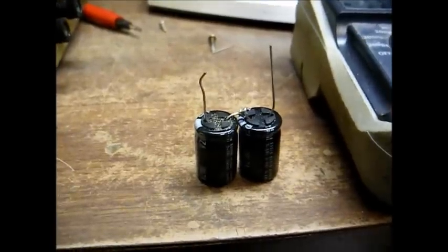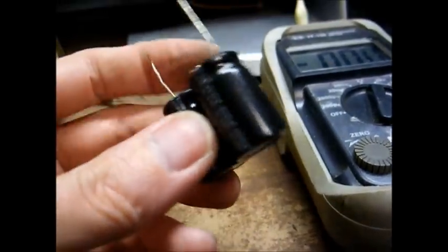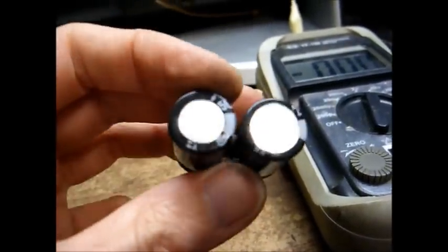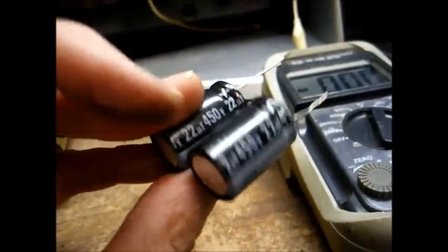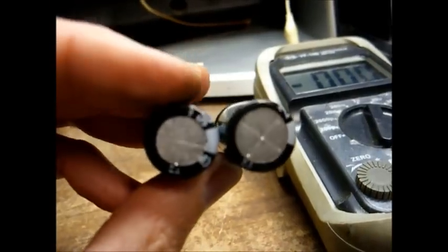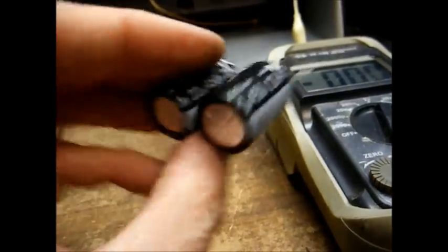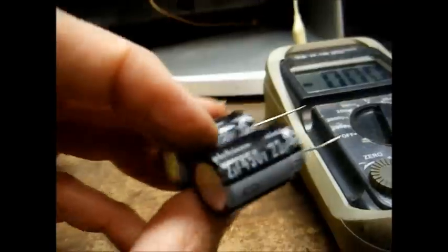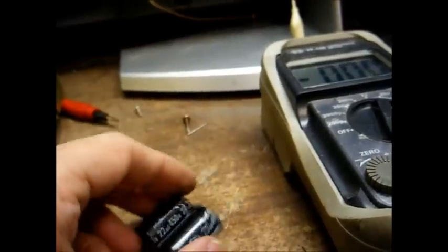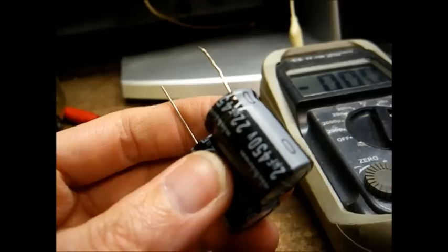And here's how we get around that capacitor problem. We simply wire two 22 microfarad capacitors rated at 450 volts in series with one another. You just hook the positive of one capacitor to the negative of the other capacitor, since these are electrolytics. And what this does, when you wire capacitors in series, the working voltage doubles.